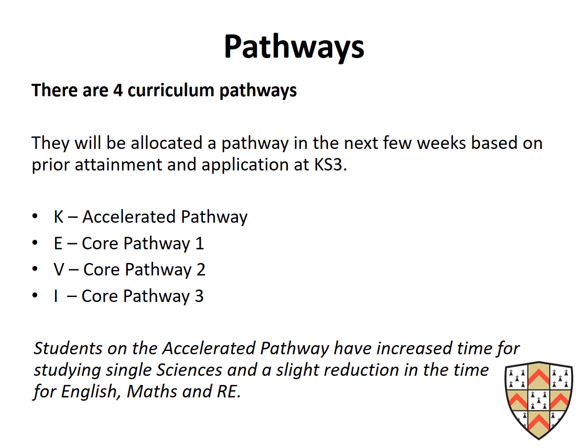The four pathways are: K, which is the accelerated pathway; E, core pathway 1; V, core pathway 2; and I, core pathway 3. Each pathway is chosen based upon a student's ability and what we think will allow them to do the best they possibly can in their GCSEs. Students on the accelerated pathway will have increased time for studying single sciences and a slight reduction in time for English, Maths and RE.